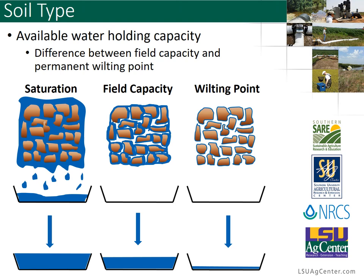When we talk about irrigation, we typically talk about it in terms of inches. The relationship is: if you remove the soil particles and the airspace and allow that water to enter a cup, then the amount in that cup is equal to a depth. So saturation would have more water in the cup because there's more water in the soil, compared to wilting point, which would have very little water in that cup.